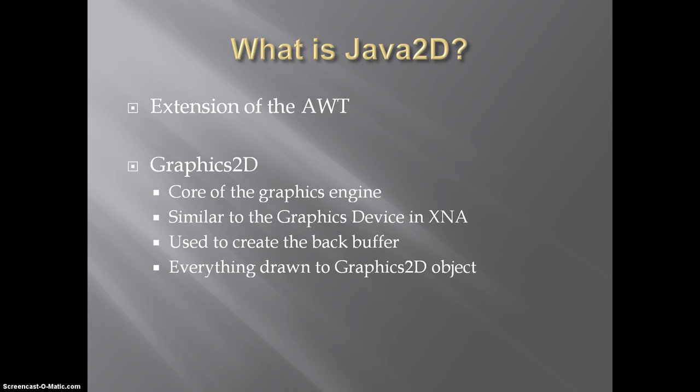Now the heart of Java 2D is the Graphics 2D class, which extends the Graphics class. Now this is similar to the graphics device in XNA, where the lower level device code is wrapped in a more user-friendly class. The Graphics 2D class is the primary class we use for drawing and controlling shapes, images, and text, as well as for creating and drawing to the back buffer.